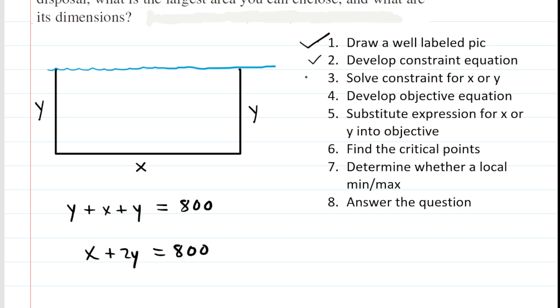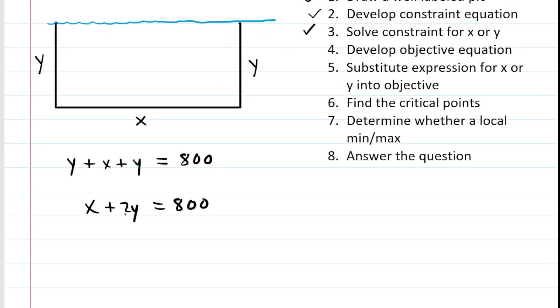In step three, we're going to solve the constraint either for x or y, whichever variable is easier to solve for. In this case it's easier to solve for x. We do that by simply subtracting 2y from both sides of the equation, giving us x equals 800 minus 2y.